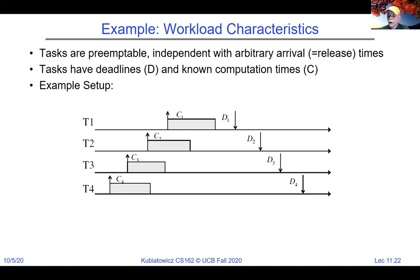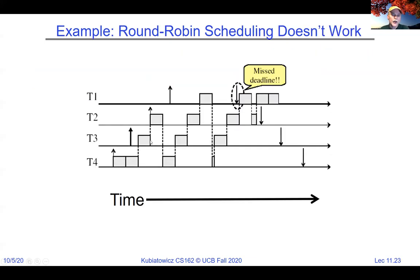What if we tried round-robin? With tasks arriving in order t4, t3, t2, t1, round-robin gives each a quantum in turn. But we can hit a point where computation hasn't finished yet but the deadline arrives — round-robin fails and your car runs into the wall. The problem is round-robin has no notion of deadlines; it was designed for multiplexing, not deadline-meeting.